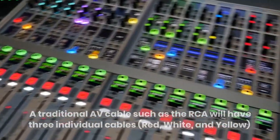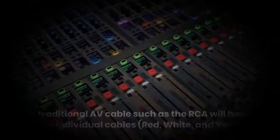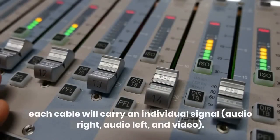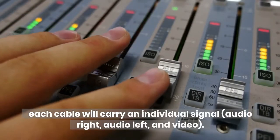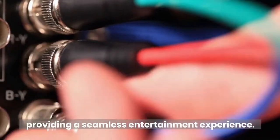A traditional AV cable such as the RCA will have three individual cables: red, white, and yellow. Each cable will carry an individual signal - audio right, audio left, and video. Each cable will carry its respective signals from one device to another, providing a seamless entertainment experience.